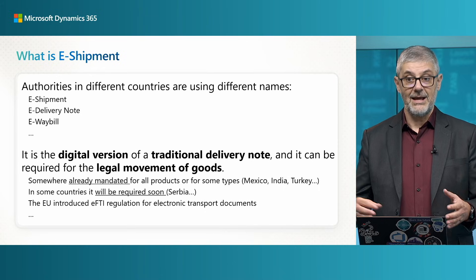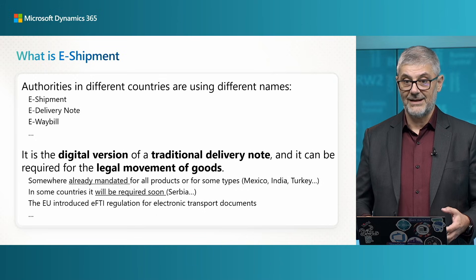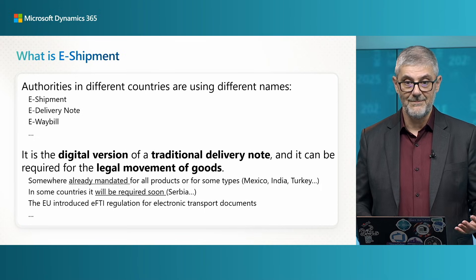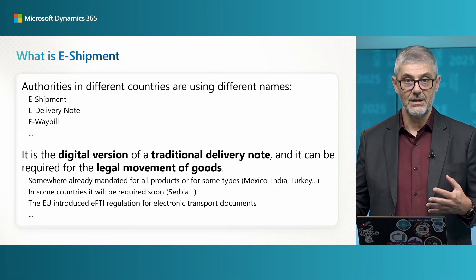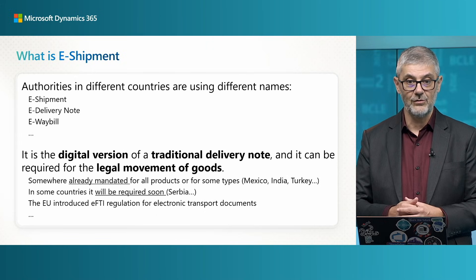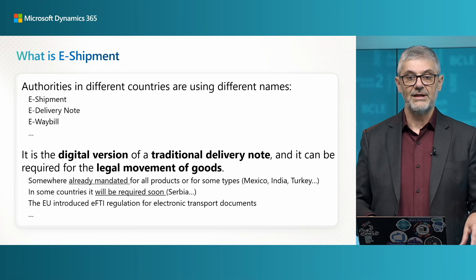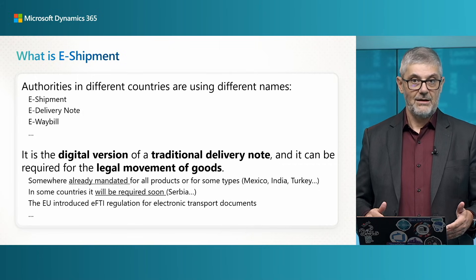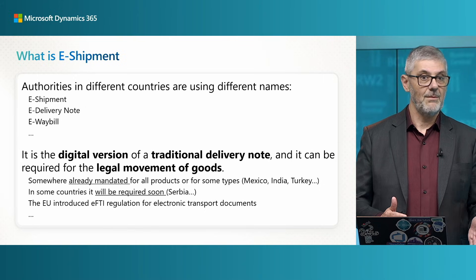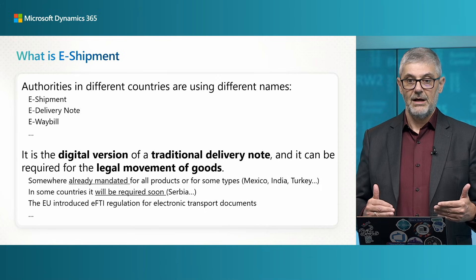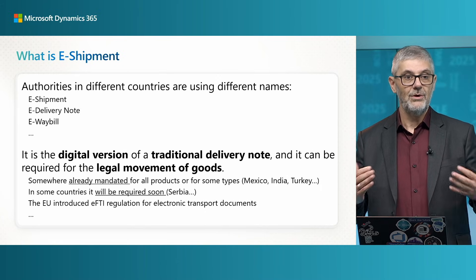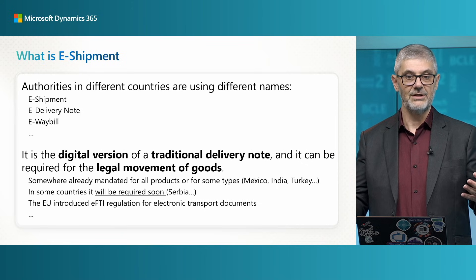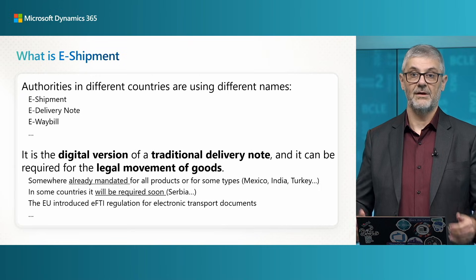This is required and can be required in many countries. Somewhere this is already mandatory — for example in Mexico and India. In some other countries it will be mandatory soon, such as Serbia and a few others where it has already been announced. On the other side, in the European Union there is introduction of the new EFTI regulation for electronic transport documents. It may or may not become mandatory, but at minimum it will allow — and actually require — authorities to receive digital versions of shipments and delivery notes. So if it already exists we will enable it, and if it becomes mandatory we will localize.